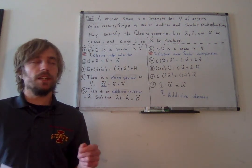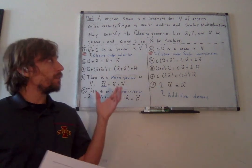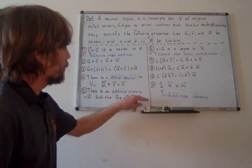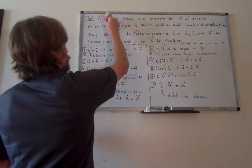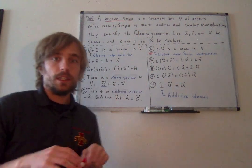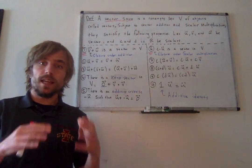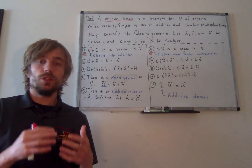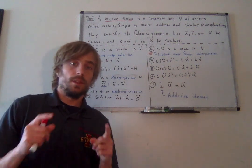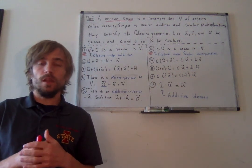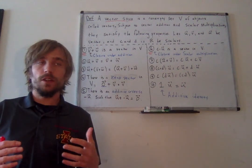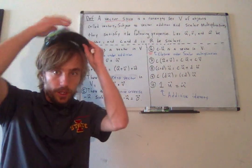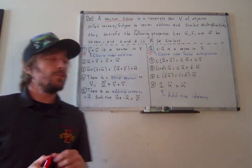We'll see an example of that in a second. But what I want to do now is define this thing called a vector space, which will, as abstractly as possible, try to describe exactly what is going on when I look at the standard types of vectors we're used to. I think this is going to be a really fun video — we're putting on a new hat, so to say.